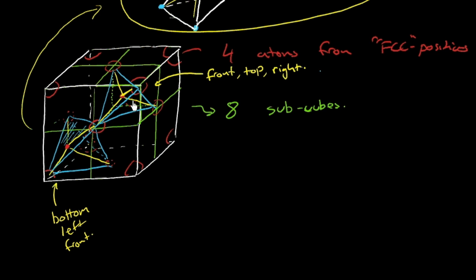So I've actually drawn the alternating corners here on purpose because, in fact, for every carbon to be bonded to four others, we can only fill half of these subcubes. So there's eight subcubes, but only half, that is, four of them, are filled.